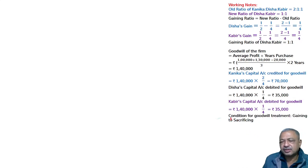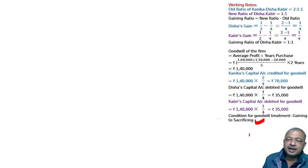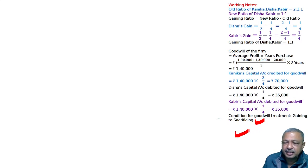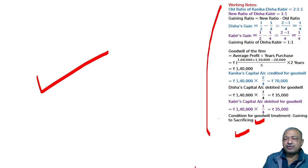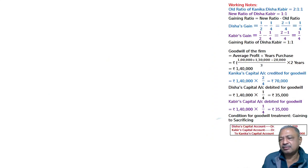The normal rule for goodwill treatment in retirement is: gaining partners pay the sacrificing partner — 'gaining to sacrificing.' This is noted in the working note, and the journal entry is: Disha's Capital A/c and Kabir's Capital A/c Dr. to Kanika's Capital A/c.